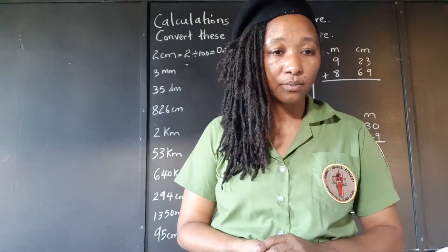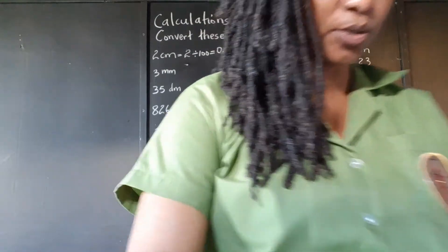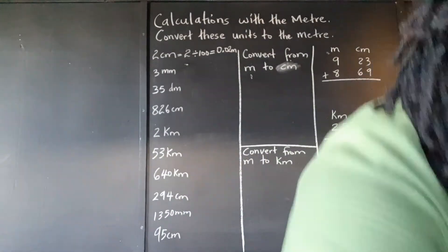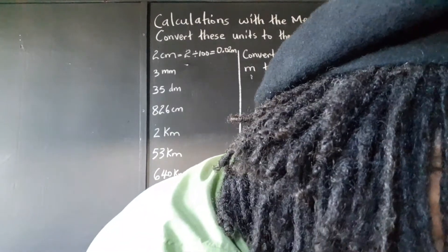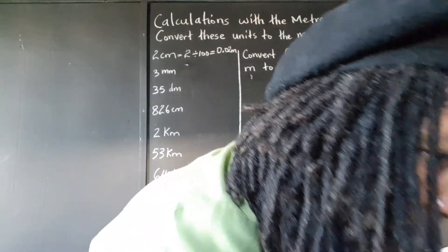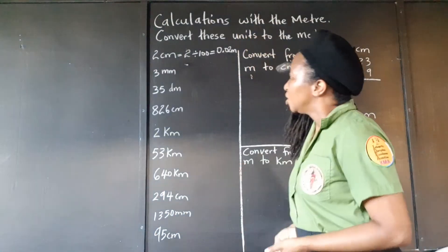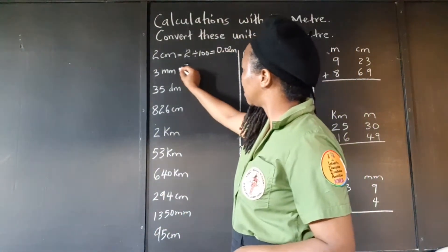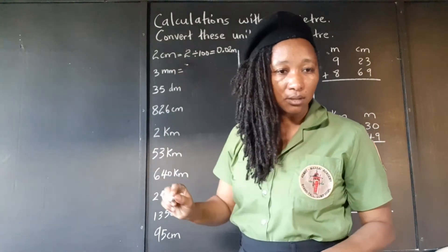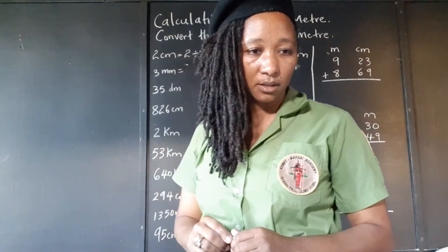A student mentions they're not seeing the board clearly. The instructor moves the camera closer. The student confirms they can now see better but mentions they're not seeing a particular angle clearly.